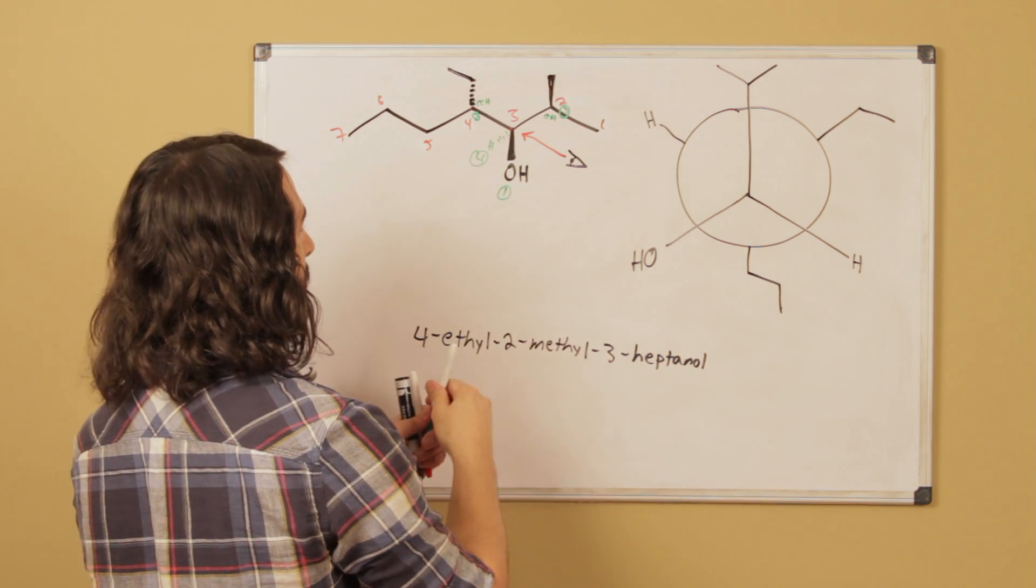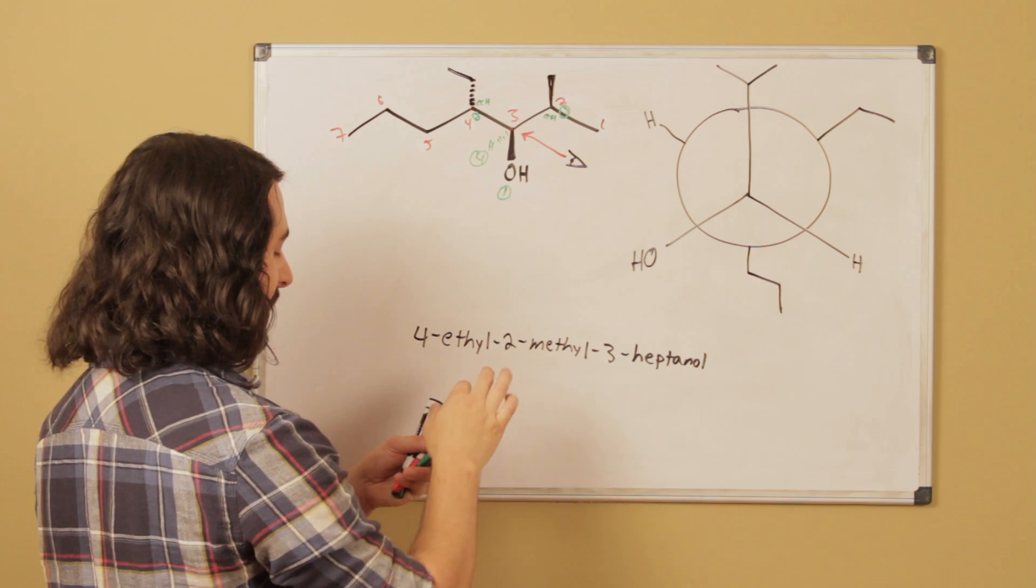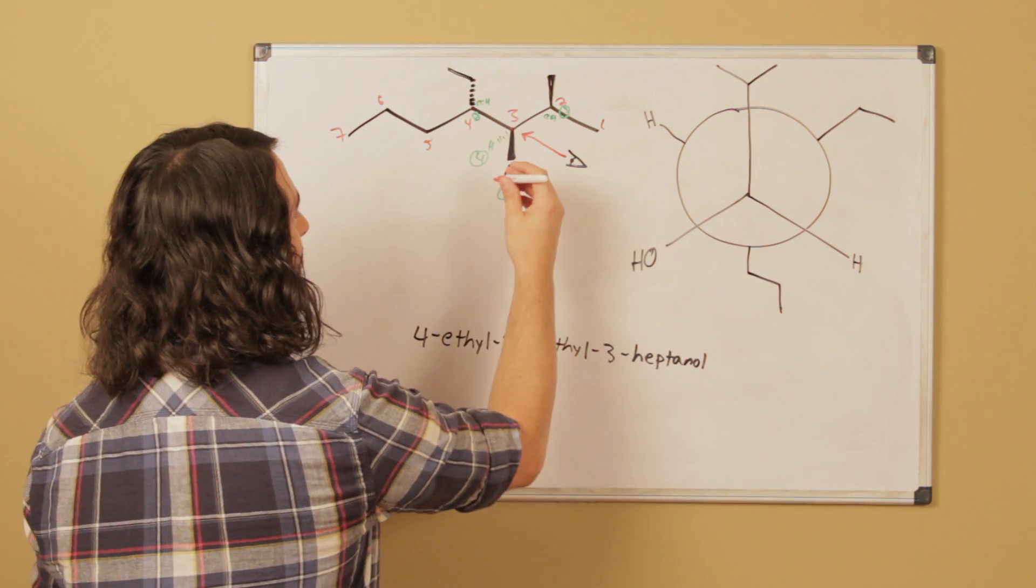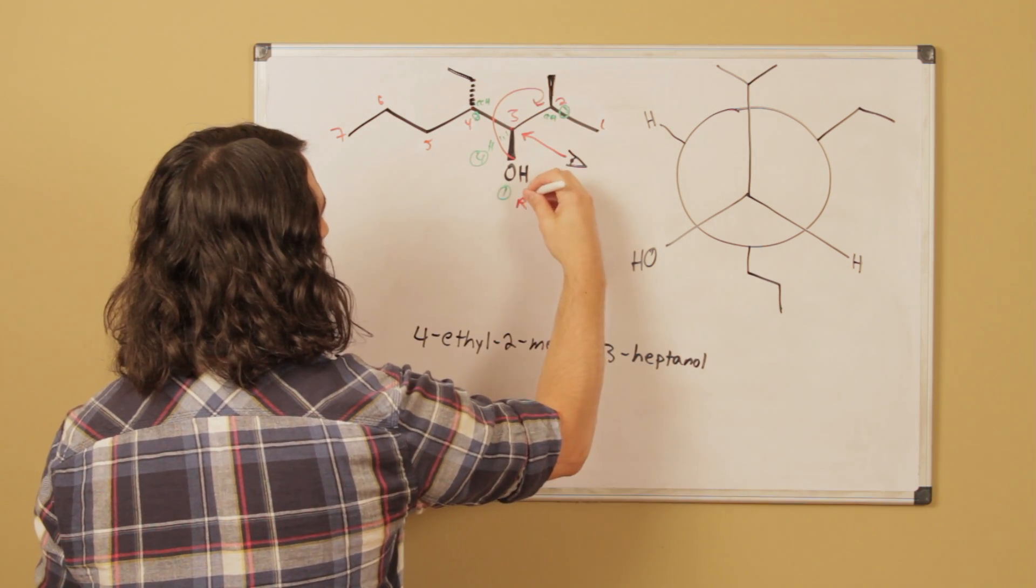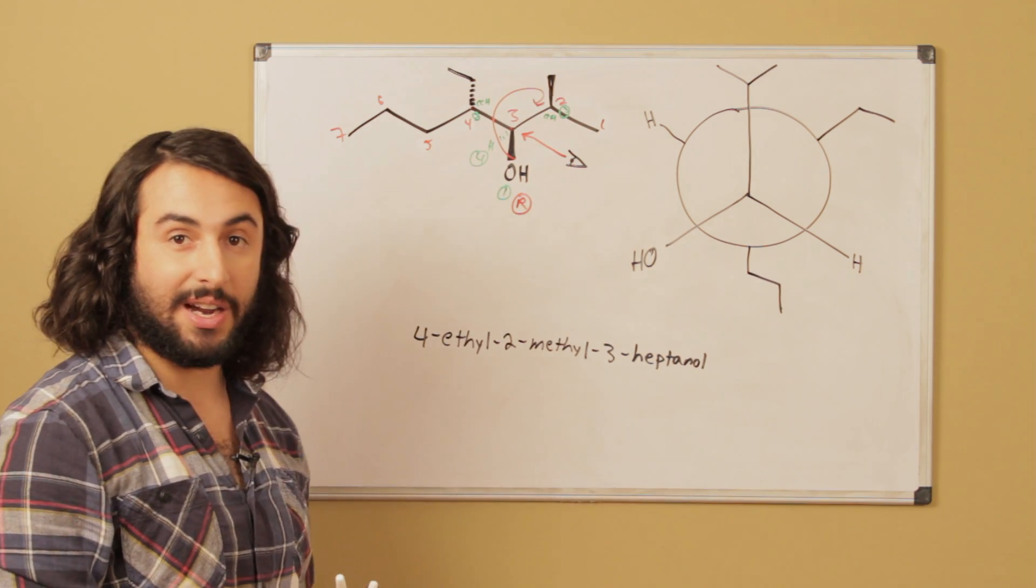And so we do have priority 4 away from us. So we can look at this and go 1, 2, 3. That is R. So number 3, carbon 3 is an R stereocenter.